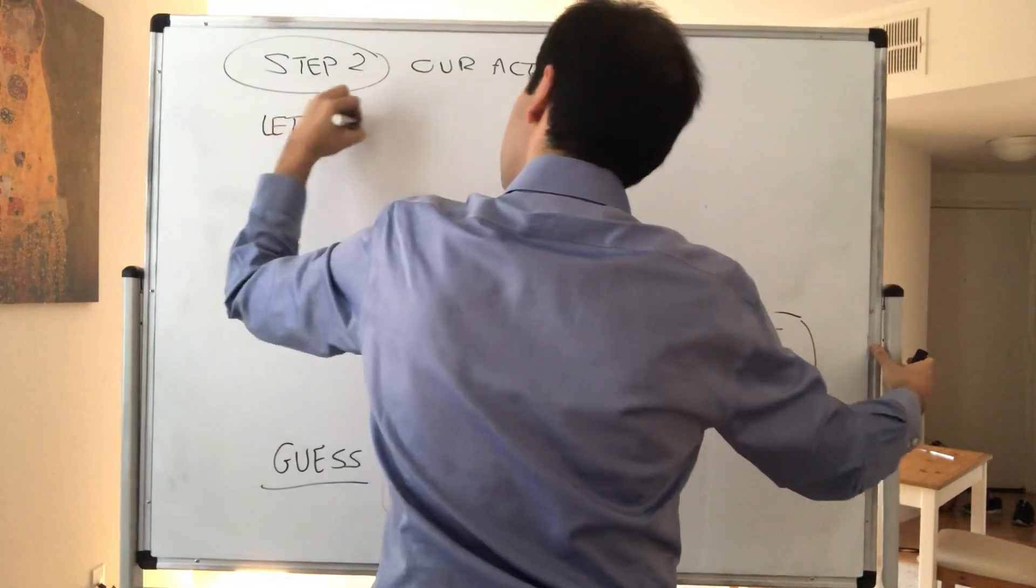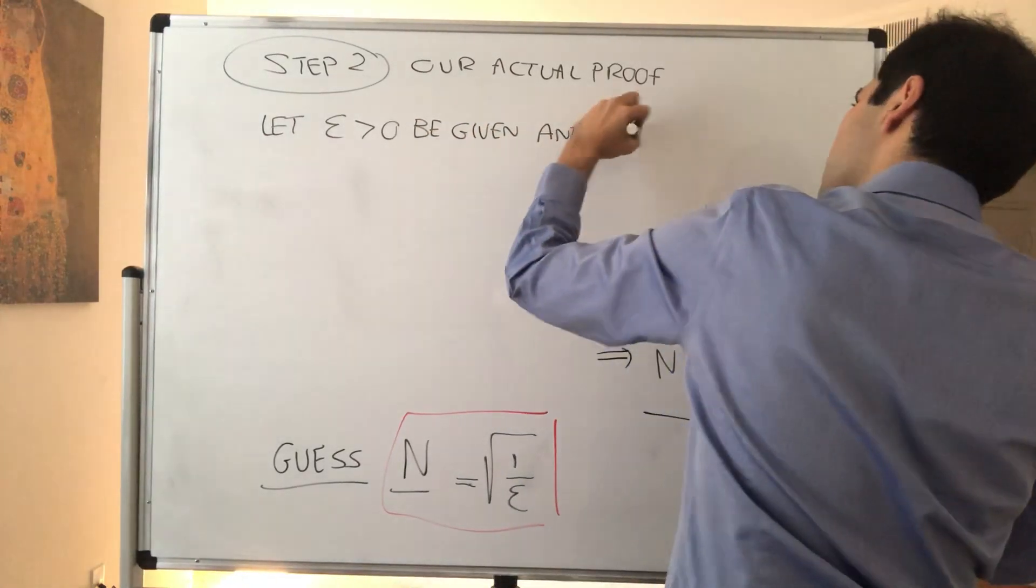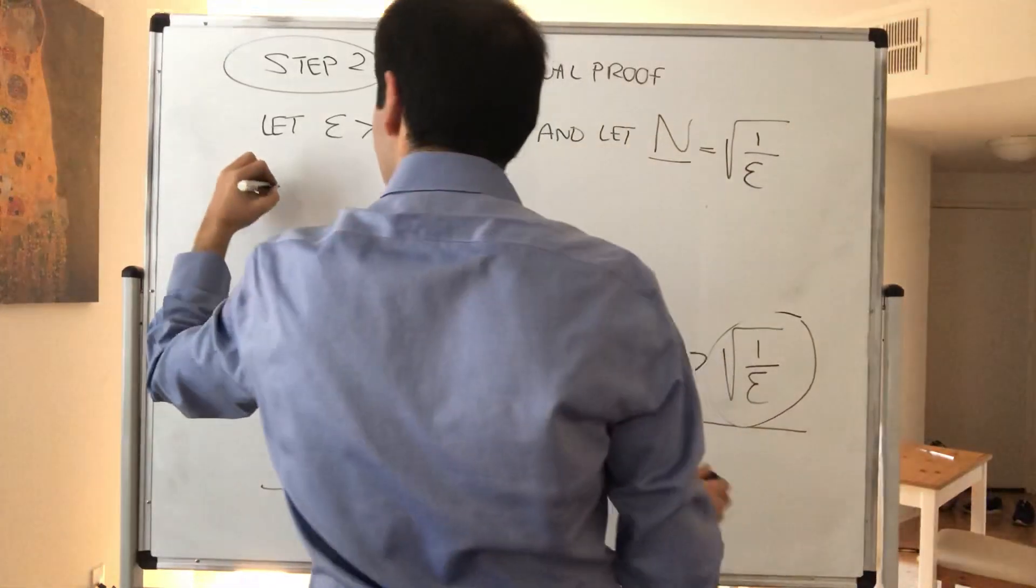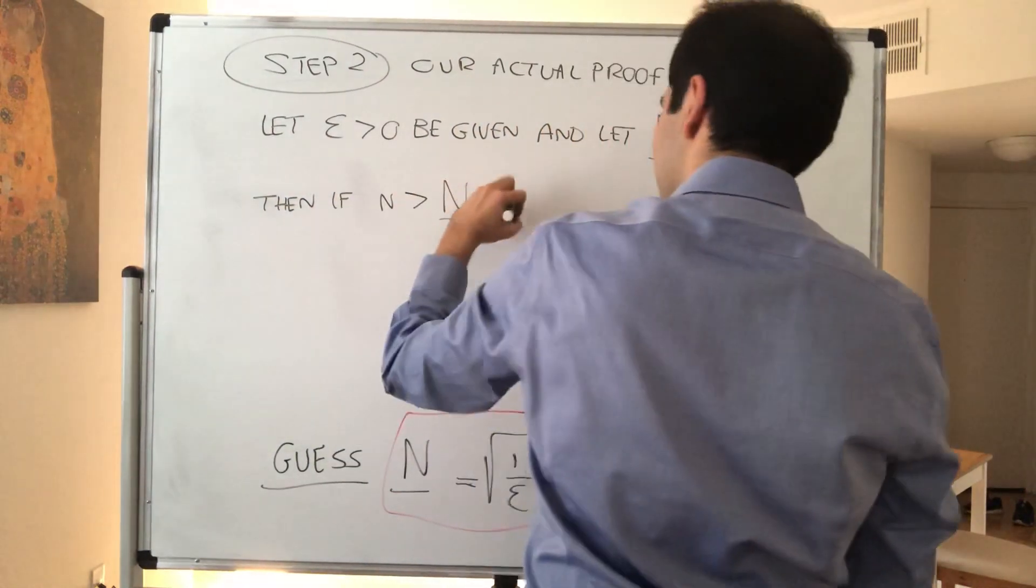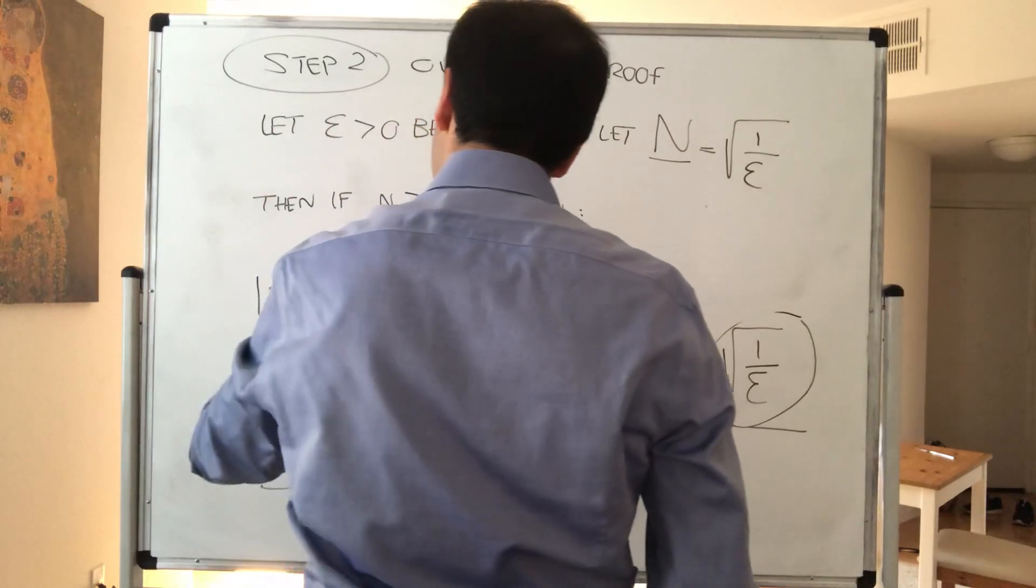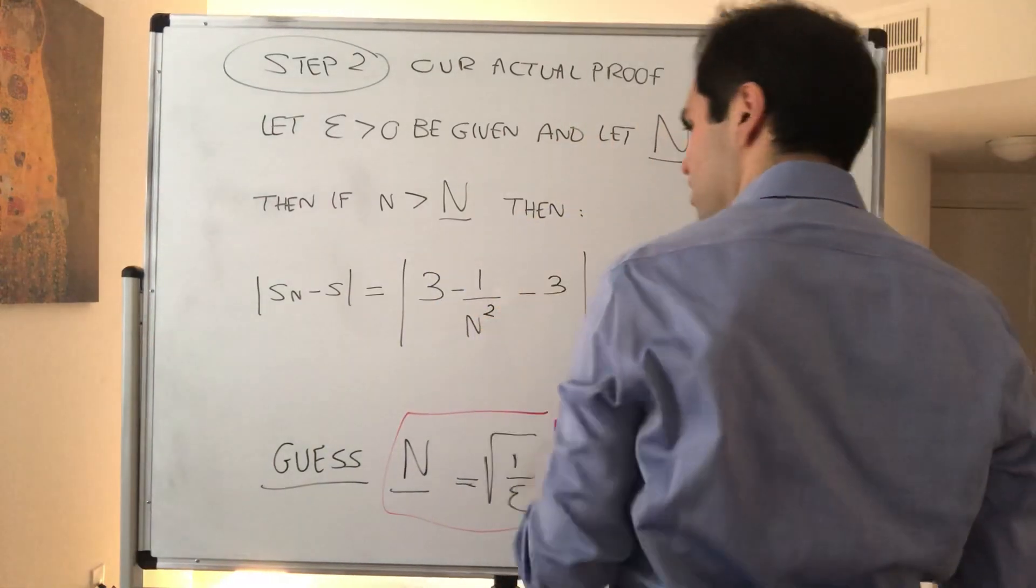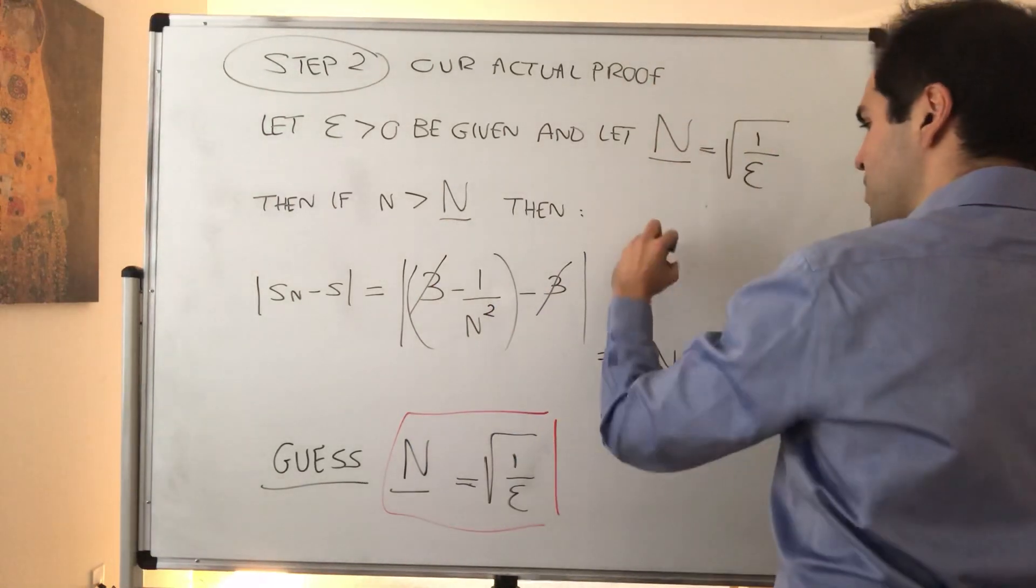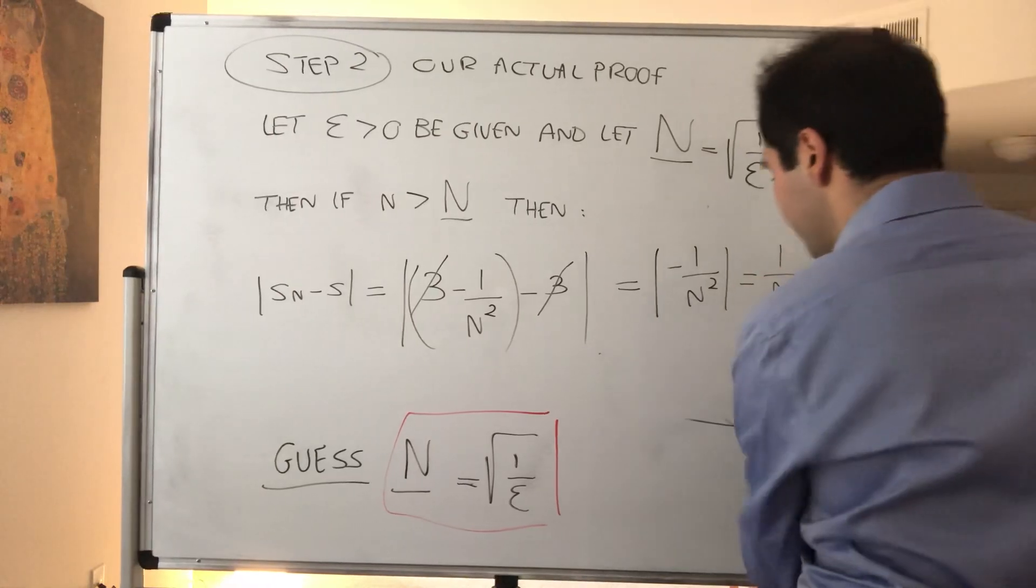Let epsilon be given. Let capital N to be square root of 1 over epsilon. Then, if n is greater than capital N, then let's look as follows. So we get SN minus S. Again, the difference between your sequence and the limit. So 3 minus 1 over N squared minus 3. And essentially, what this becomes, absolute value of minus 1 over N squared, and that's 1 over N squared. And we want to show this is less than epsilon.